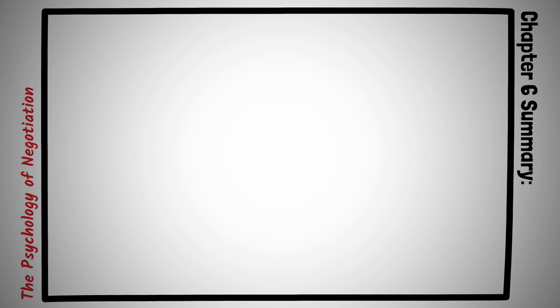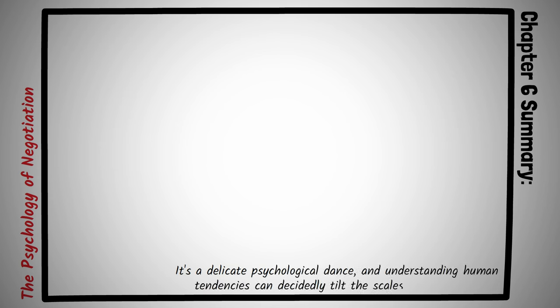Chapter 6. Summary, The Psychology of Negotiation. The act of negotiation isn't merely about crunching numbers, terms, or putting forth tangible offers. It's a delicate psychological dance, and understanding human tendencies can decidedly tilt the scales in one's favor. The Bend There Reality chapter unpacks six pivotal psychological instruments, each providing a distinctive avenue to influence, guide, and traverse the intricate maze of negotiation.